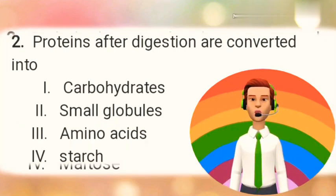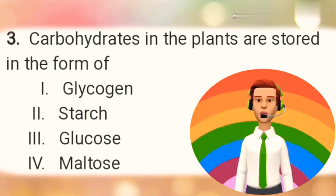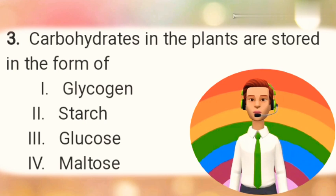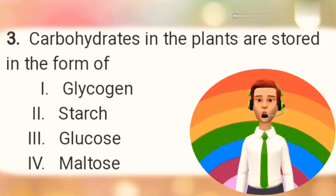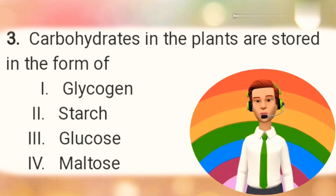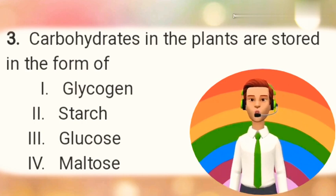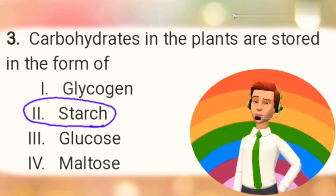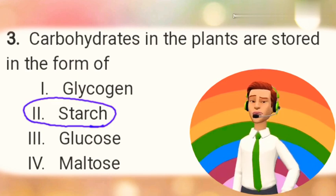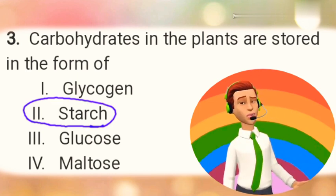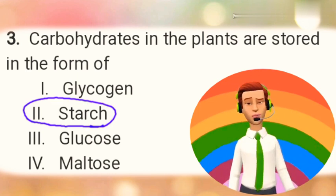Question number 3: Carbohydrates in plants is stored in the form of? Option 1: Glycogen. Option 2: Starch. Option 3: Glucose. Option 4: Maltose. The right answer is Option 2 — carbohydrates in plants is stored in the form of starch.